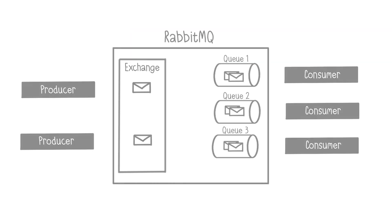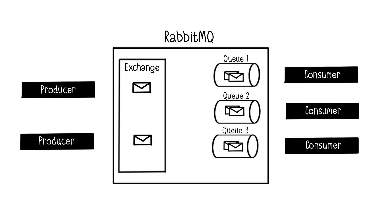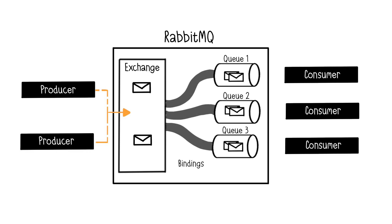When a producer sends a message, it is stored in an exchange, which is responsible for receiving messages from producers and directing them to queues based on specific rules. The queue is where messages are received by consumers. To link a queue to an exchange, you need to establish a binding, which is a connection between the two. The binding specifies the criteria for message delivery.